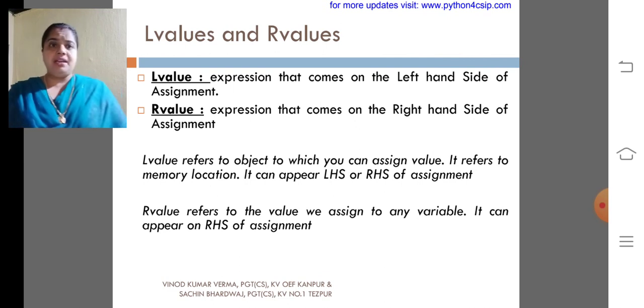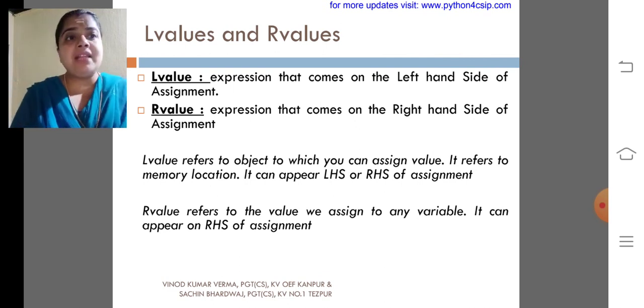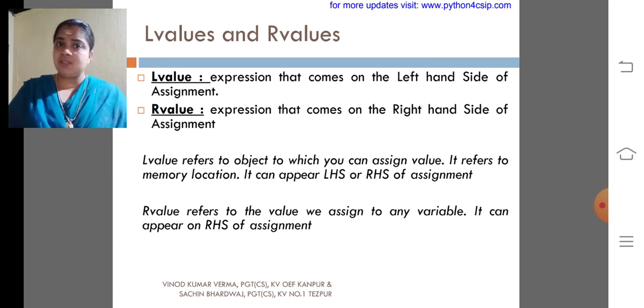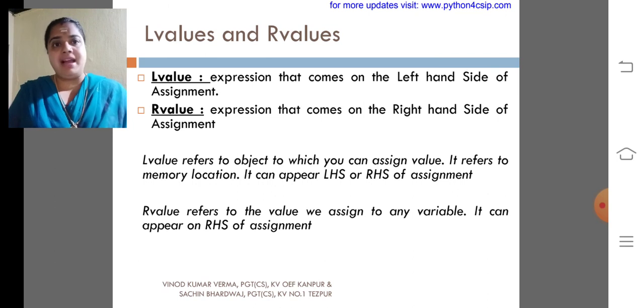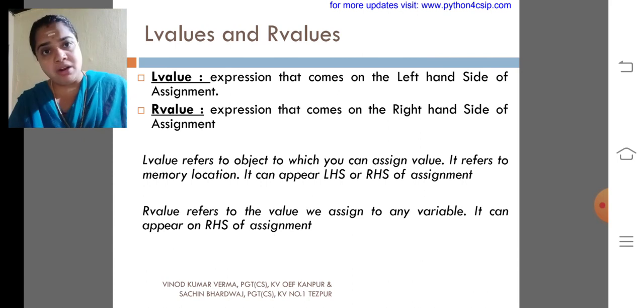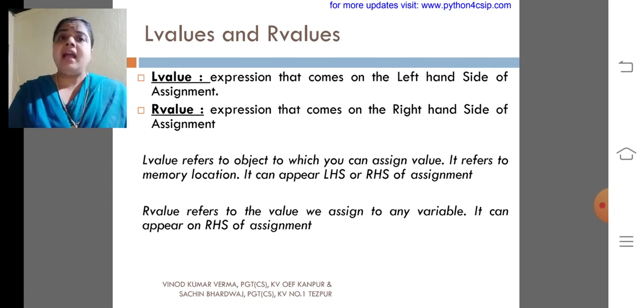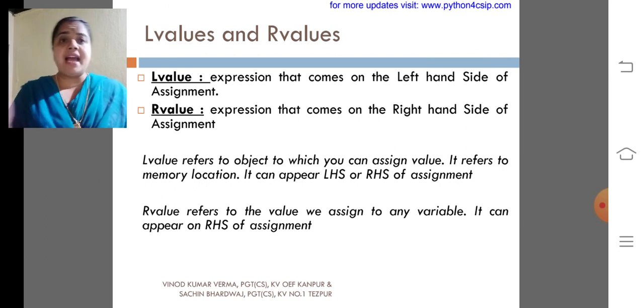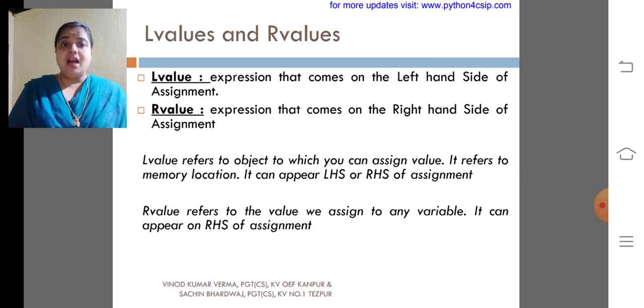L-values and R-values. Expression that comes on the left-hand side of assignment. L-value is the expression that comes on the left-hand side of an assignment operator. What is assignment operator? Nothing but the equal to. And R-value is the expression that comes on the right-hand side of the assignment. L-value refers to the object to which it can be assigned a value. It refers to a memory location. It can appear LHS or RHS of assignment. But R-value refers to the value assigned to a variable. It can appear only on RHS of assignment.